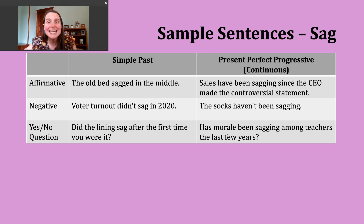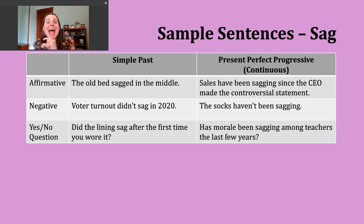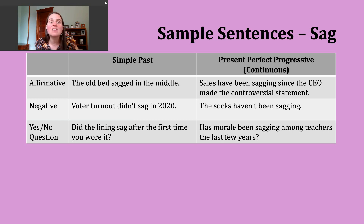To make affirmative present perfect progressive sentences, pay attention to your subject. If the subject is I, you, we, or they, the first part of the verb is 'have,' then the participle 'been' (B-E-E-N), then the -ing form of the verb. If the subject is he, she, or it, use 'has,' 'been,' and the -ing form. For example: 'Sales have been sagging since the CEO made the controversial statement' — the idea that sales have been declining and going down.